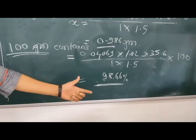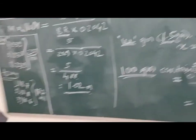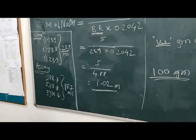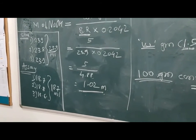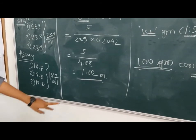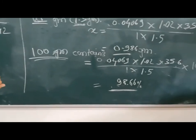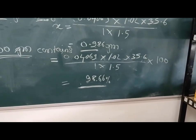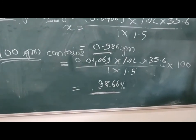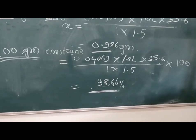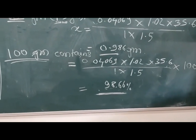Result: the calculated molarity of 1 normal NaOH is 1.02 molar, and the percent purity of zinc oxide is 98.66 percent. Thank you for attending and listening to the session.